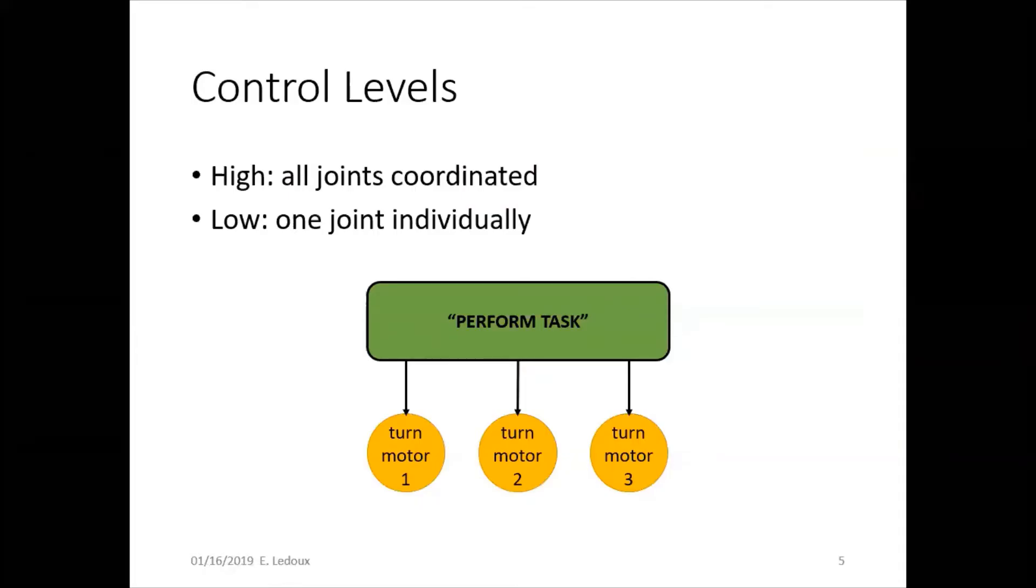There are two categories of control. High-level control, which is the upper-level coordination of all the joints, that's basically like the perform task main code. And then the low-level control is each joint individually. So what happens when you need to turn joint one, joint two, joint three, the low-level control is the actual signals to the motor.